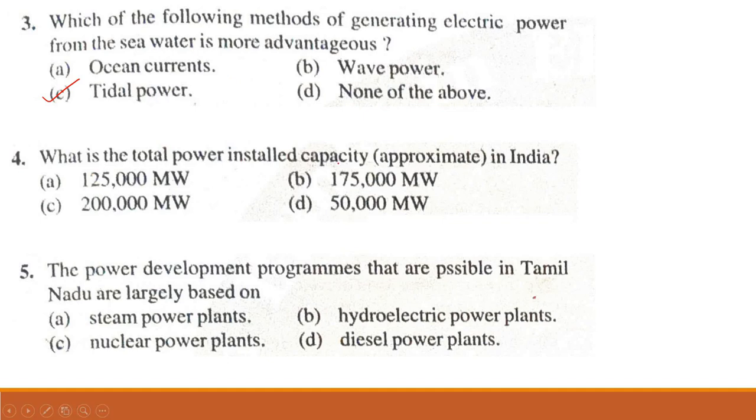Problem 4. What is the total power installed capacity in India? A. 125,000 megawatts; B. 175,000 megawatts; C. 200,000 megawatts; D. 50,000 megawatts. The answer is: in the year 2007, the generated power was 125,000 megawatts. But in the year 2015, the generated power was 275,000 megawatts. But the answer given is for the year 2007, that is 125,000 megawatts.